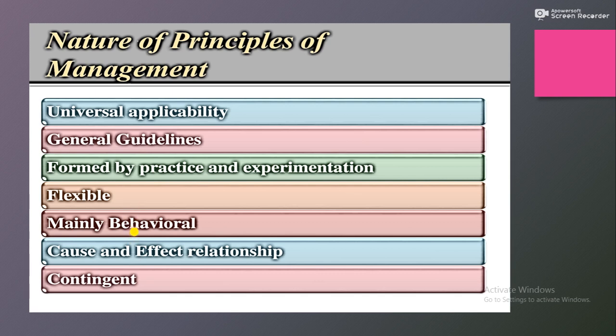Next one is mainly behavioral. جیسا کہ پہلے بھی بتایا کہ جو management کے principles ہیں وہ human beings پہ apply ہونے ہیں۔ Human beings کا جو behavior ہے وہ الگ الگ situations میں الگ الگ ہو سکتا ہے۔ تو management principles guidelines provide کرتے ہیں کہ ہمیں اپنے employees کے ساتھ کس طرح سے treat کرنا چاہیے اور human resources اور material resources کے بیچ میں کس طرح سے relationship establish کرنی چاہیے۔